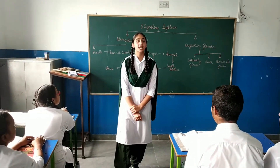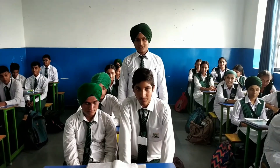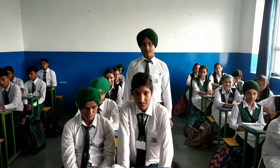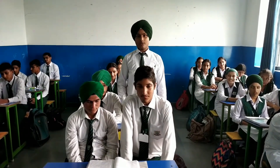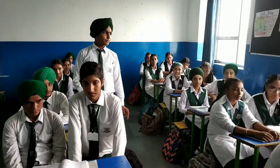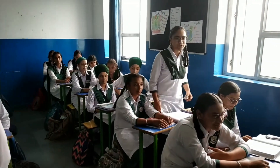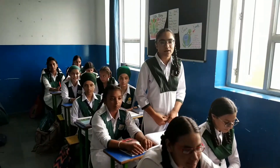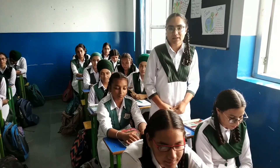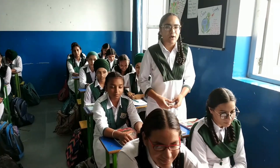The pharynx is the common pathway of food and air. The food from the pharynx goes to the esophagus. The esophagus is a straight muscular tube about 20 cm long. It helps in the passage of food from the pharynx to the stomach by relaxation and contraction.